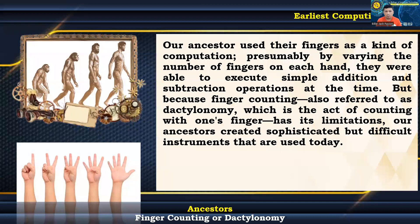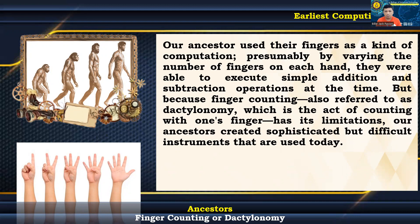In the history of calculating tools, human fingers are one of the earliest computing devices known. Because the first forms of computing relied solely on physical labor or mechanical devices, this may have been due to a lack of modern technology and electricity at the time. Our ancestors used their fingers as a kind of computation, presumably by varying the number of fingers on each hand, enabling them to execute simple addition and subtraction operations.